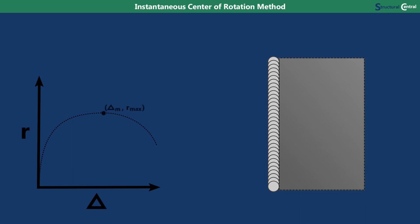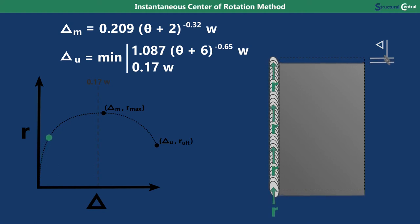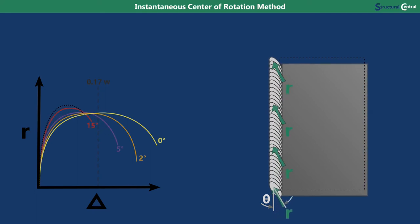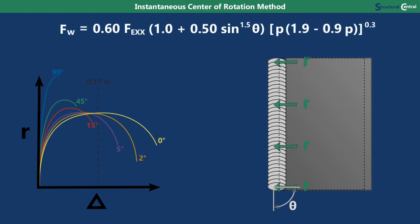The weld reaches its maximum possible reaction at a deformation equal to delta M, and it ruptures once it reaches delta U. The formula for delta U includes a cap of 0.17 times the weld thickness W in order to simplify computations. The shape of the load-deformation curve means that parts of the weld with small deformations can still end up with significant reactions. For example, a part of the weld with a deformation of just 50% of delta M has a reaction that is 91% of its maximum reaction. An additional complication for welds is that the load-deformation relationship depends on the angle of the load relative to the angle of the weld. When the longitudinal axis of the weld is parallel to the load, it is very ductile. As the load angle changes, the maximum reaction increases but ductility is lost. The formula for the curves can be found in AISC's steel construction manual.